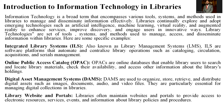Online Public Access Catalog, known as OPAC, is an online database that enables library users to search and locate library materials, check their availability and access other information about the library's holdings. Today, every library has a website attached to it, meaning you can search and check the availability of materials, and the catalog can showcase what information is available in the library.